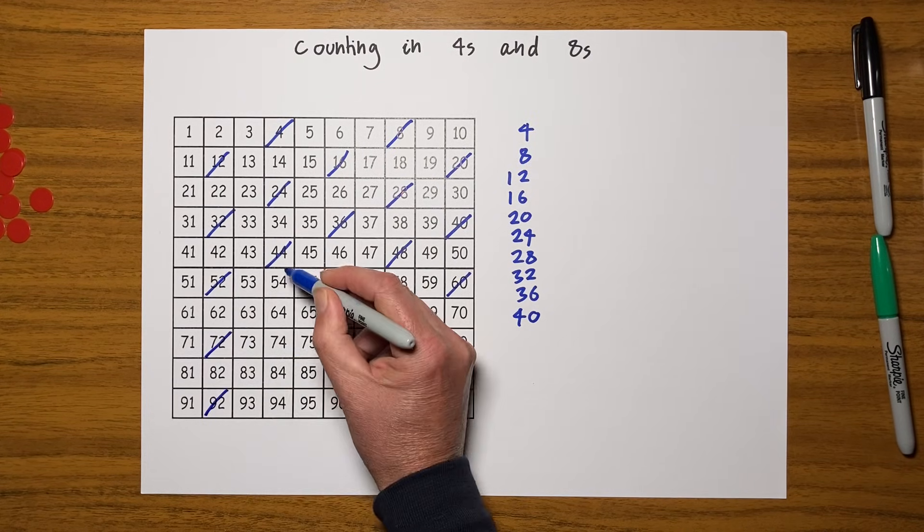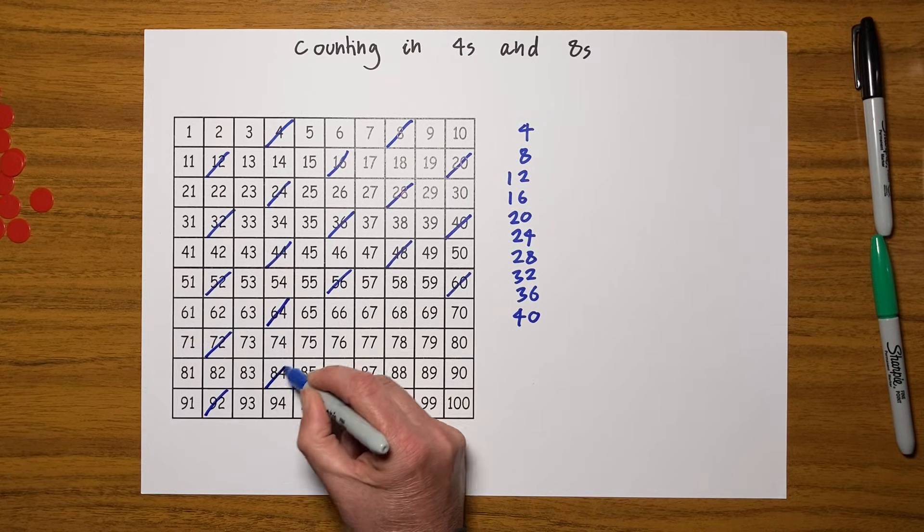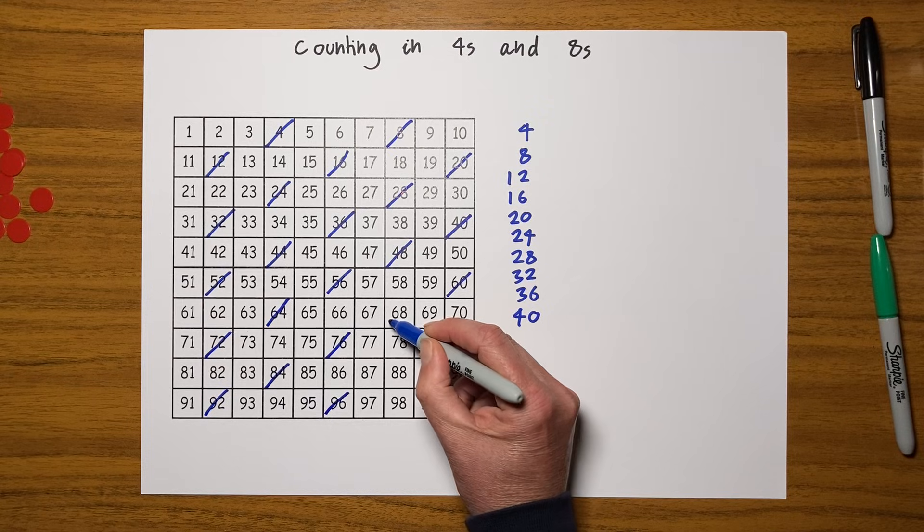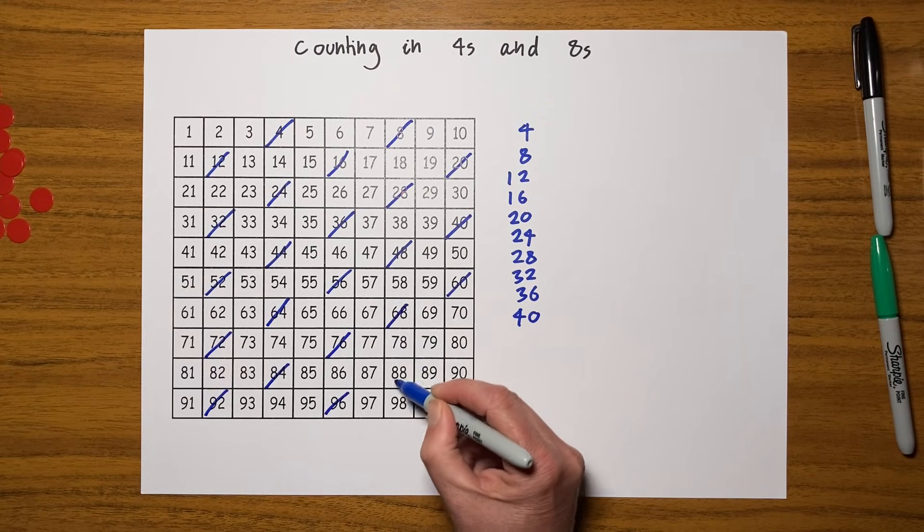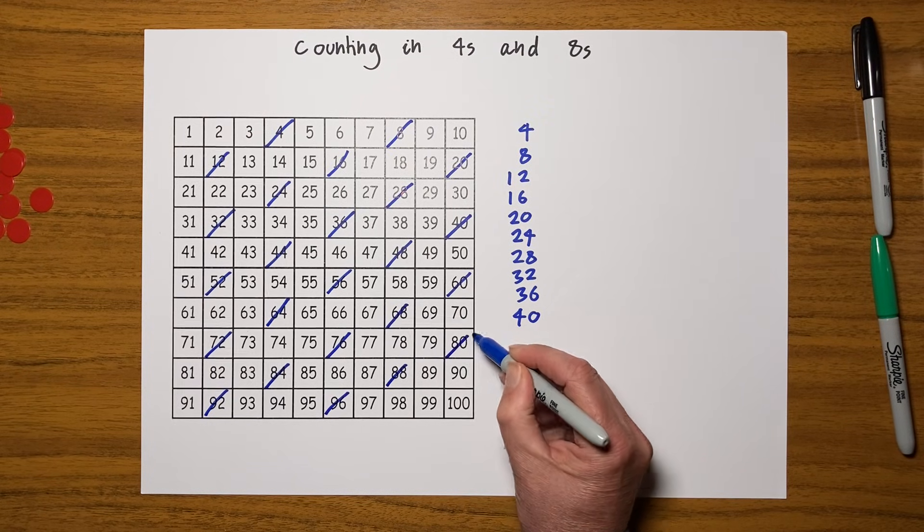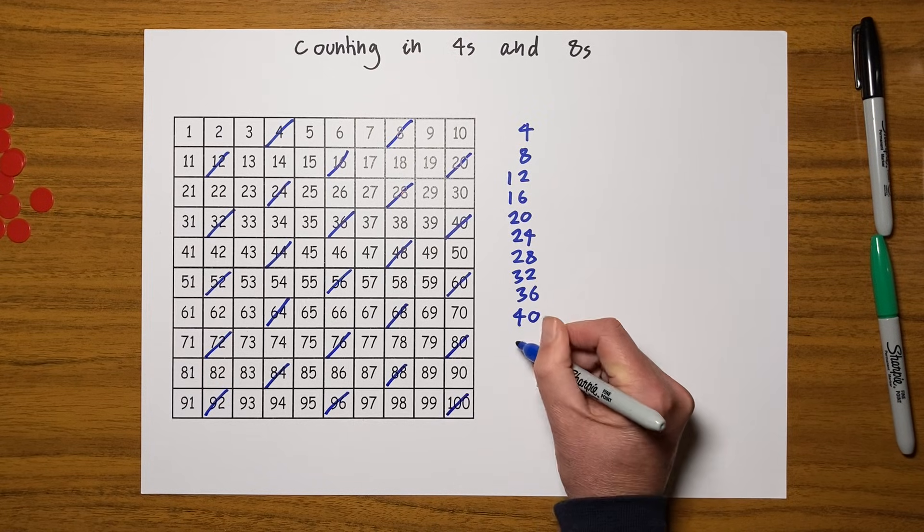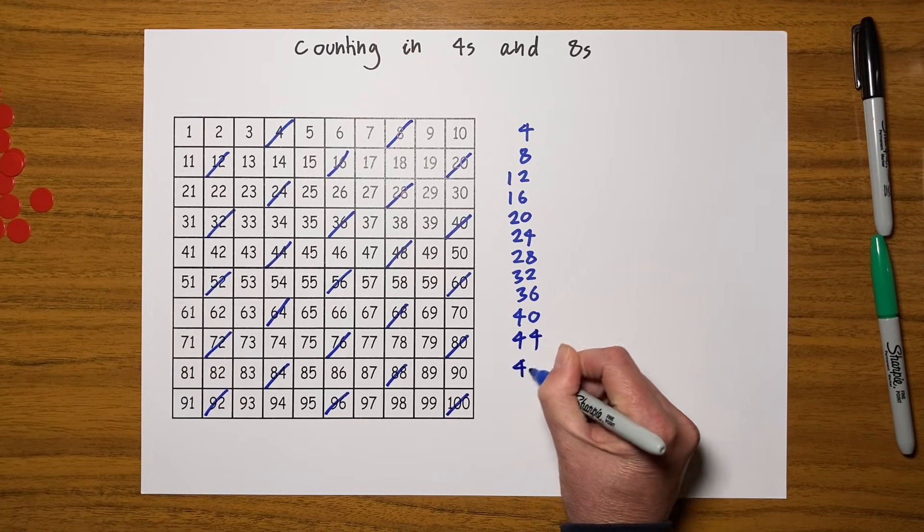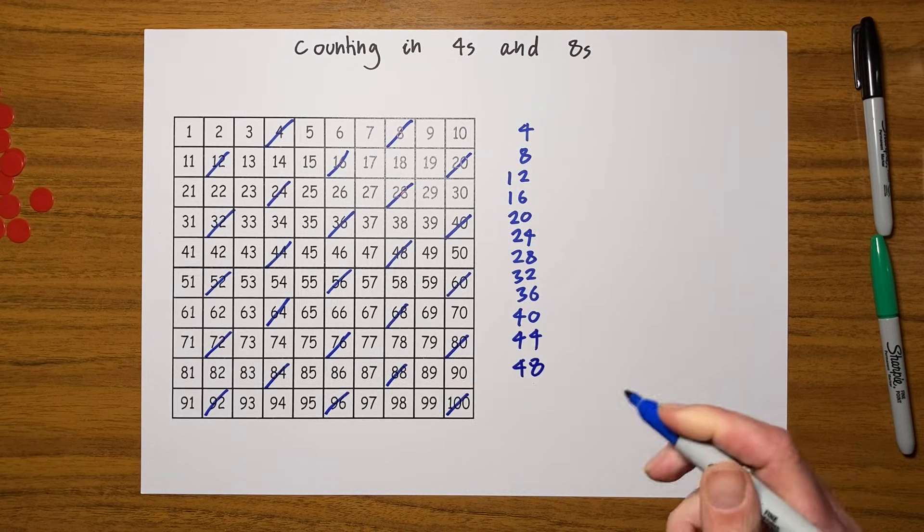This is going every other one, so I could also go down, miss one, do one. That's quite fun to do the patterns because pattern spotting is a really useful thing. I won't do too many more, I'll go up to forty-eight. So there we go, counting in fours.